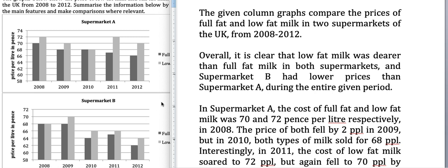'Dearer' means costlier. It is clear that low-fat milk was dearer than full-fat milk in both supermarkets, and Supermarket B had lower prices than Supermarket A during the entire given period. In Supermarket B, the prices of both types of milk are lower than those in Supermarket A. The overview, when written after the introduction, saves time later on.